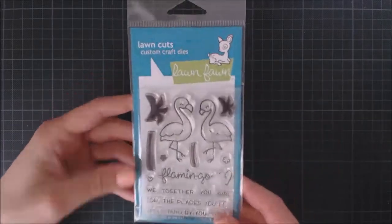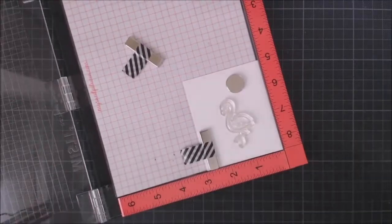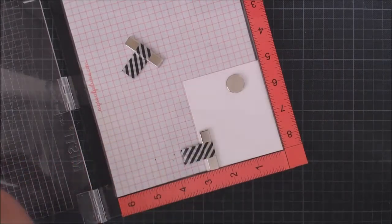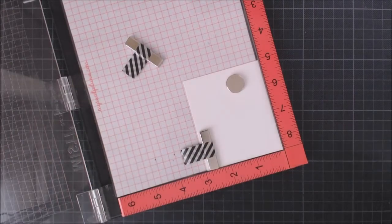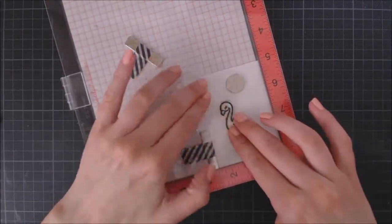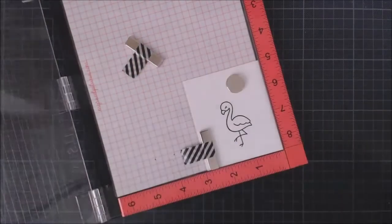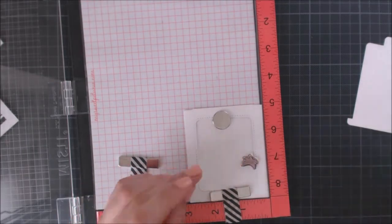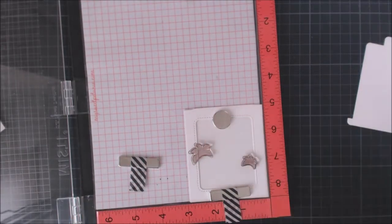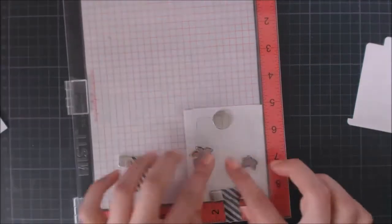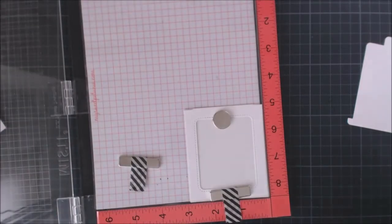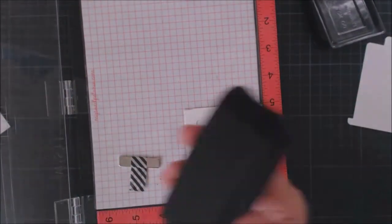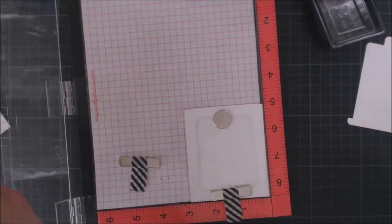Today, I'm using the Flamingo Together stamp set from Lawn Fawn. And I'm going to take some Versafine Onyx black ink and one of the flamingo images and I'm stamping that on a piece of Bristol smooth paper. Then, I'm going to stamp the big and small palm trees on the front of the pocket. And I'm using StazOn ink for that because this ink stamps perfectly on slippery surfaces like acetate.